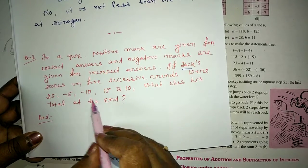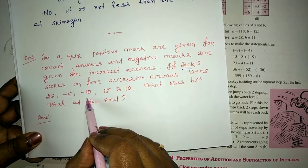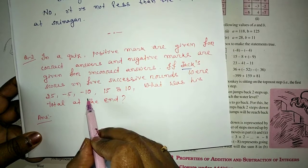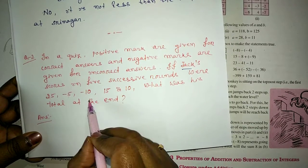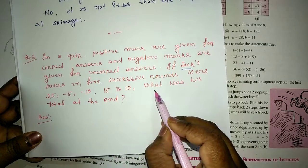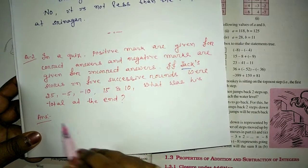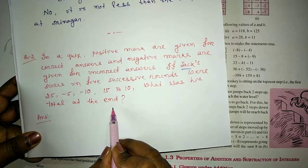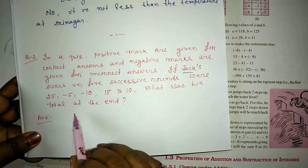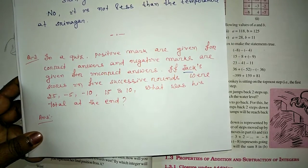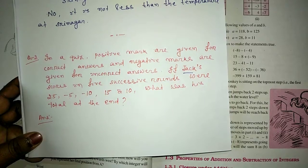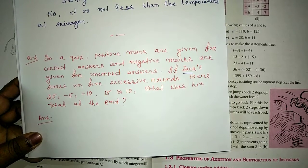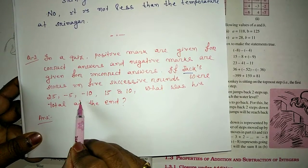Here the score, correct answer is positive and incorrect answer is given in negative integer. The question is, what was his total at the end? If we will calculate the total score Jack scored in the quiz competition, we will add all these scores.